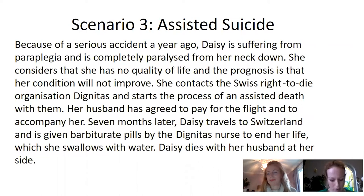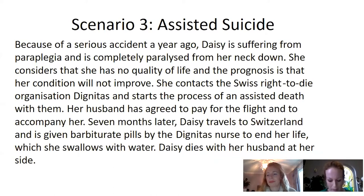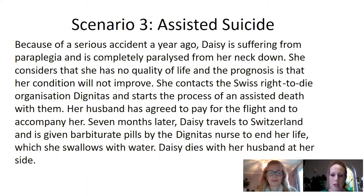Scenario three is also an instance of assisted suicide. Here we have a patient, Daisy, who needs more than just a physician to help her. She's suffering from paraplegia, so she's completely paralysed from the neck down, and the prognosis is that there's not going to be any improvement in her condition. So she contacts a right-to-die organisation such as Dignitas in Switzerland and begins this process of assisted dying. This takes some time because in Switzerland they'll need to get her medical records, and she'll need someone to accompany her on the flight. Her husband has agreed to pay for the flights and accompany her. She goes to Switzerland, is given pills by a nurse, swallows them with water, and she dies.